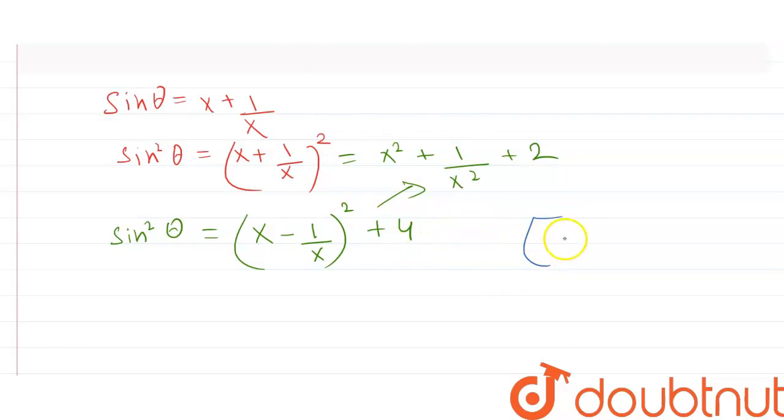Opening this, (x - 1/x)² becomes x² + 1/x² - 2, plus 4, and cancelling this out, it gives plus 2, the similar equation.